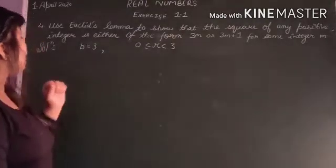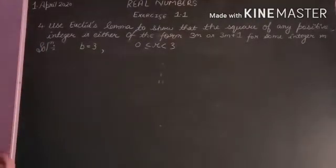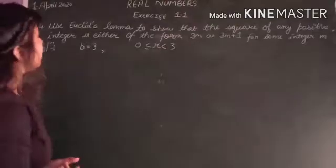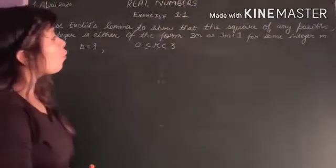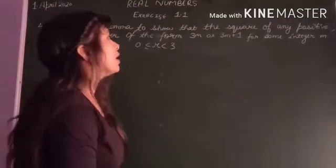So here in this question, we have to use Euclid's lemma to show that the square of any positive integer is either of the form 3m or 3m plus 1 for some integer m.